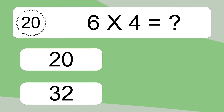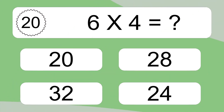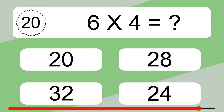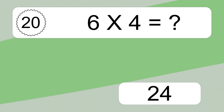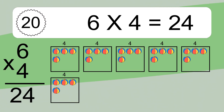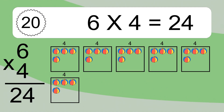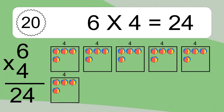6 times 4 equals what? 6 times 4 equals 24. We have 6 boxes, and each box has 4 colorful balls inside. If you count all the balls in all the boxes together, you will have 6 times 4 balls. This equals 24 balls.